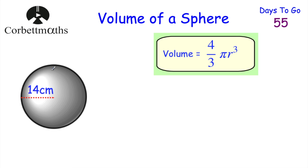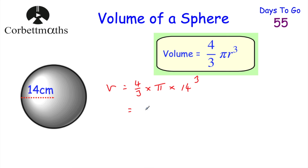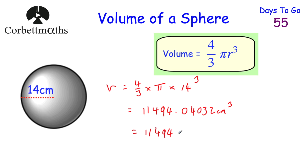Here we've got a sphere — feel free to press pause and work out the volume yourself. So the volume is equal to 4/3 multiplied by π multiplied by the radius, which is 14, cubed. This is a calculator question, so we can type it in: 4/3 × π × 14³ gives us 10,976/3 π, or 11,494.04 centimetres cubed to two decimal places.